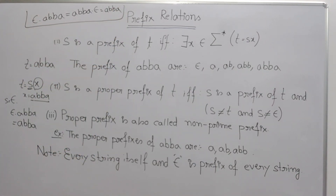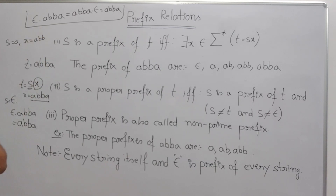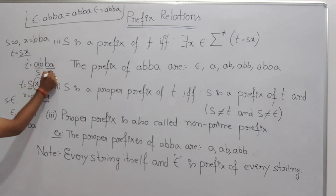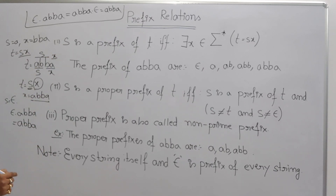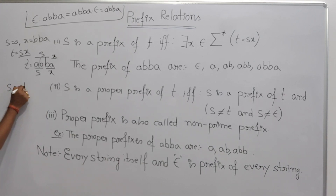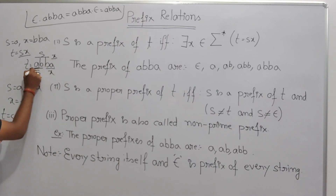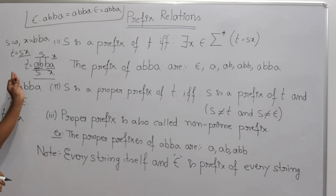Now you can take s as 'a', then x will be 'bba', and t equals s·x again. You can keep extending: s as 'ab', x as 'ba'; s as 'abb', x as 'a'; and finally s as the whole string 'abba' and x as epsilon. Each time I'm taking s from the beginning — first epsilon, then a, then ab, then abb, then abba — and x is the remainder.